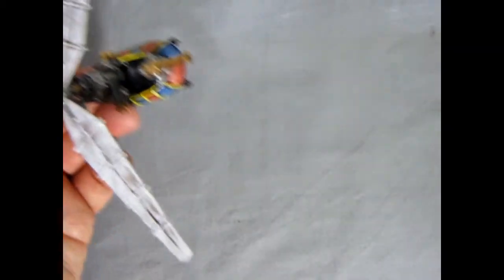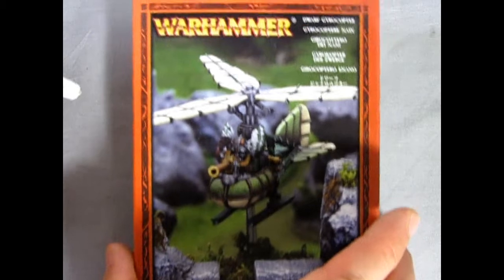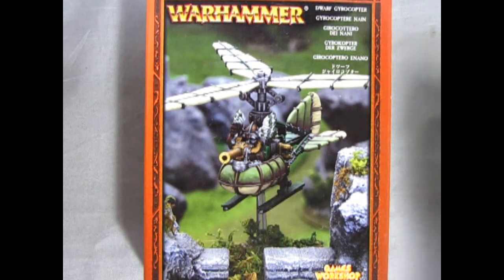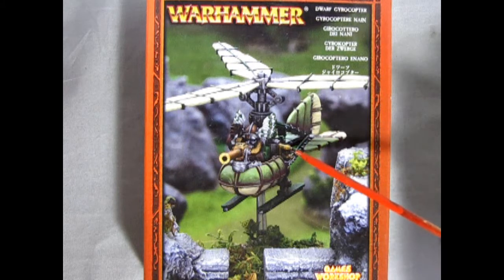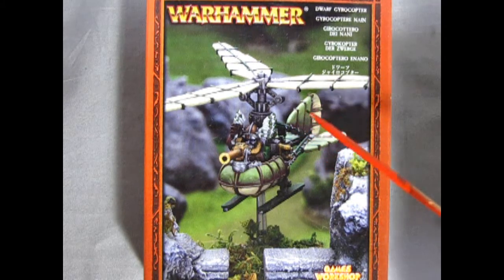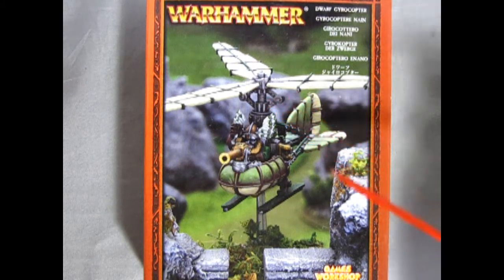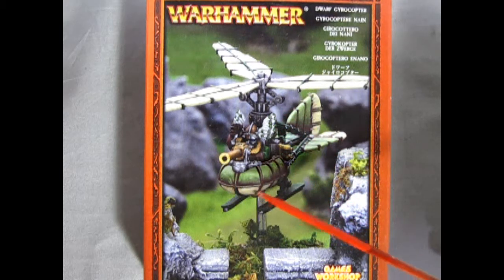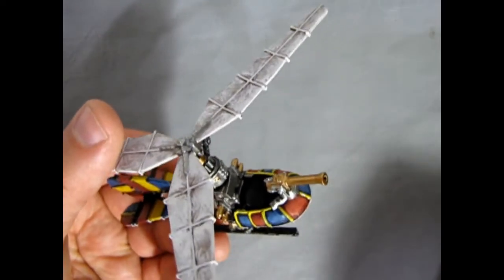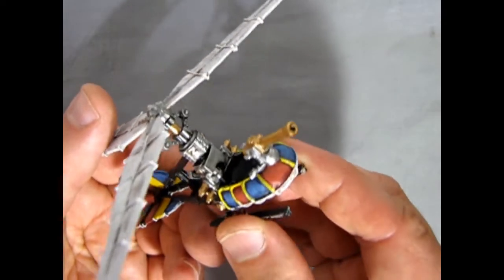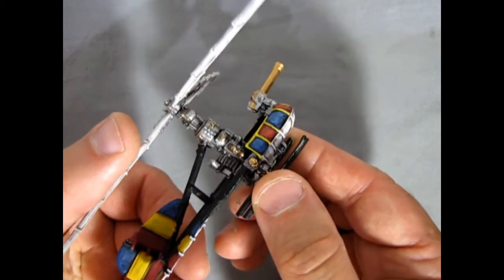Now for all the gold where it's supposed to go I took inspiration from the actual box top. As you can see they've got the gun completely in gold as well as little things that stick out the side. But again much inspiration for our Karak Eight Peaks gyrocopter came off of that box top.